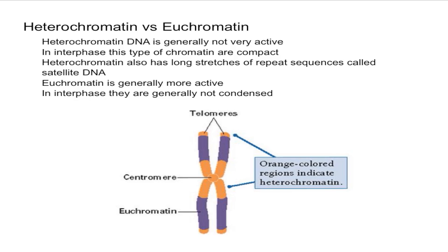On the other hand, euchromatin is generally more important DNA. Euchromatin is a region of the chromosome that is condensed only during mitosis or meiosis. So in interphase, it contains many genes that are being actively transcribed. This makes sense because for a gene to be transcribed, it has to be uncondensed, or else you can't transcribe the gene.